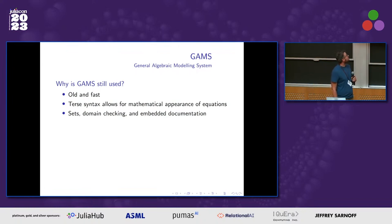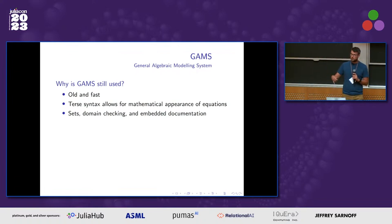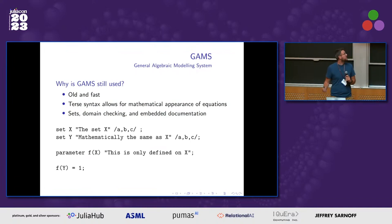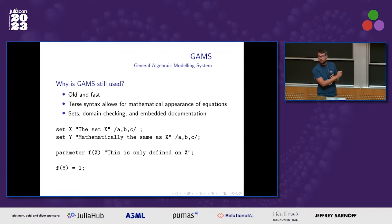The syntax is exceptionally terse. It's one of the reasons we actually like Julia — because the syntax is similar for creating constraints and things like that. Python is not. There's also set domain checking and embedded documentation. Here's an example: this is creating a set in GAMS and the description is included directly in the definition of the set. When you generate a report, GAMS will tell you what each element is.